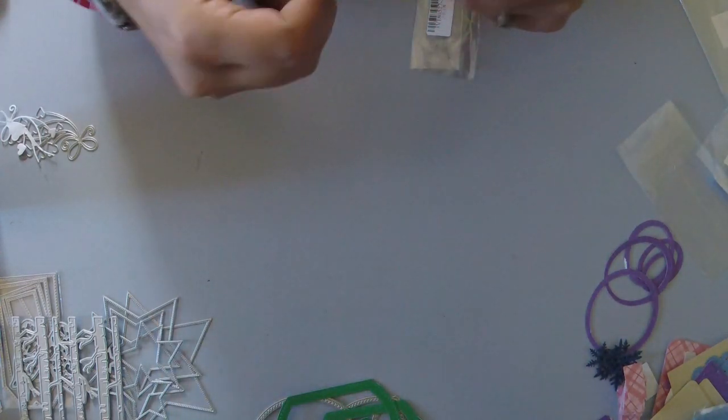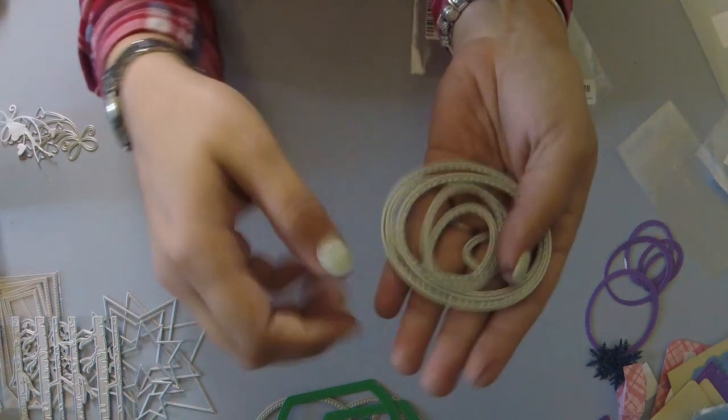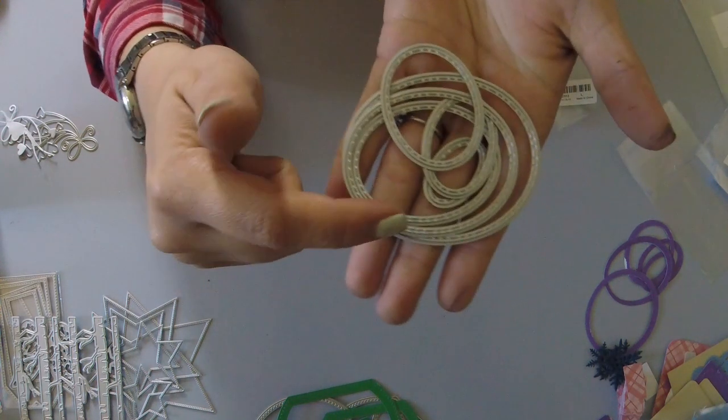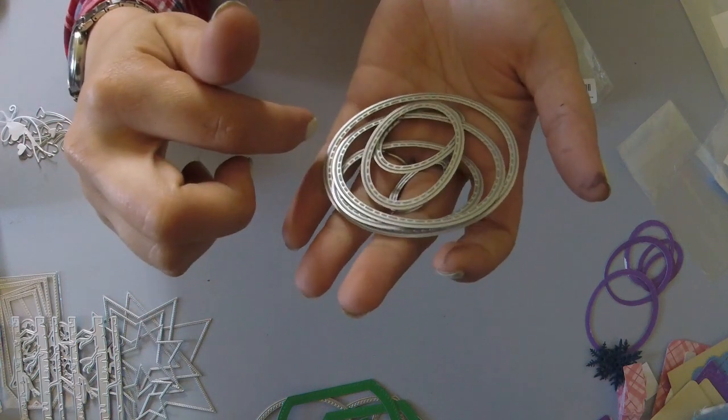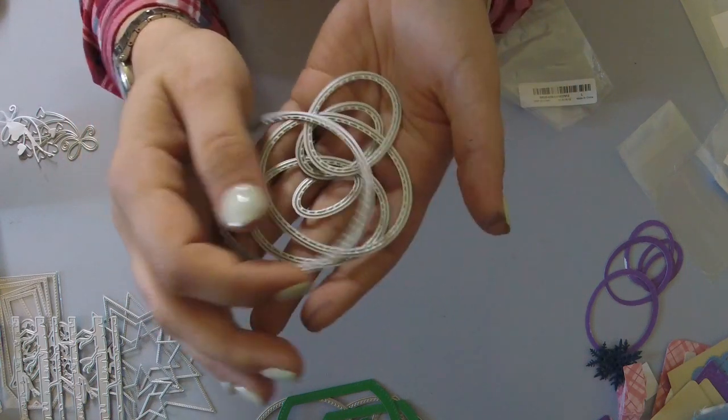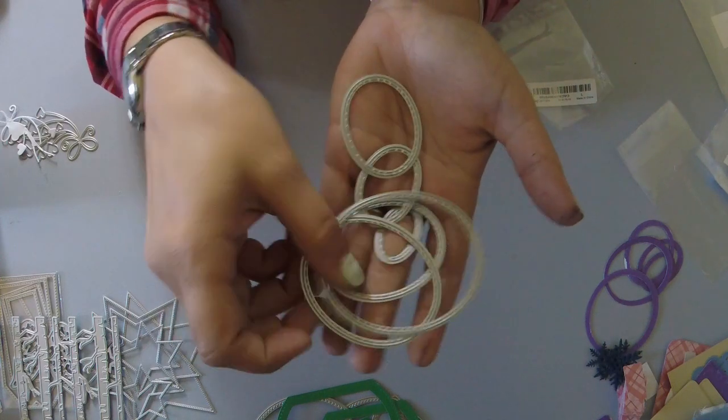And then next up would be these purple right here, which are these ovals, which also have the stitched lining in them. There are six, yeah, six ovals, nope, five ovals. Sorry, one, two, three, nope, I was right the first time, six, six ovals.